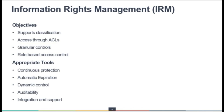IRM has some objectives and tools to protect your data. Objectives include supporting classification access through access control lists, providing the data owner and administrators with granular control on that data, and RBAC — role-based access control. For appropriate tools, continuous protection means the IRM ensures that any data being managed by the IRM implementation is protected all the time.